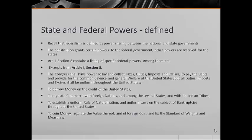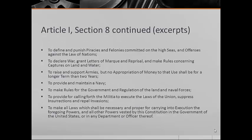Congress is also given the power to establish a uniform rule of naturalization — meaning immigration issues, visas, green cards, and how to become a citizen are determined by Congress, not the states. Congress has the power to coin money and regulate the value of money, to declare war, to raise and support armies, and to provide and maintain a navy.